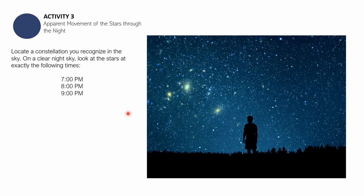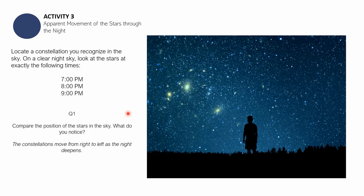Let us now head towards the answers to these questions. For the first question, the answer is the constellations move from the right to left or from east to west. As the night deepens, they are going farther from the east and closer to the west.